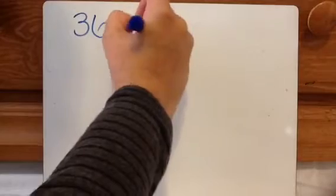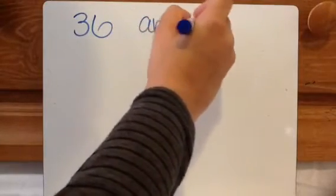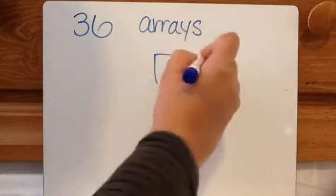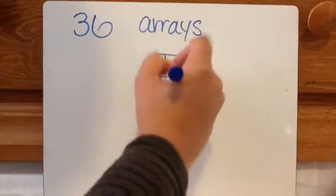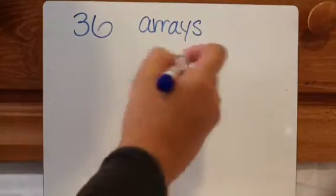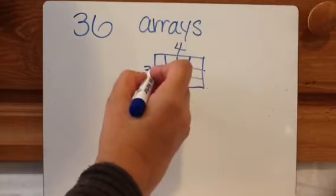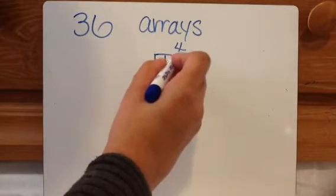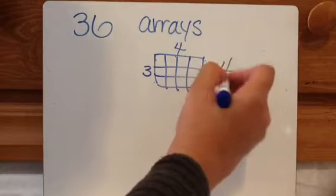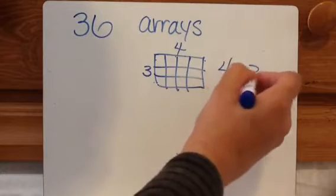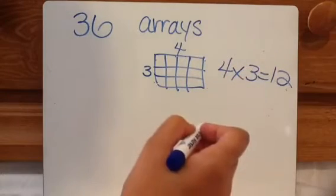So let's say you're told to make arrays that represent 36. Represent means show. If you don't know what an array is, an array is kind of like a setup of numbers or objects that's a faster way of multiplying. Like I know there are three rows and there are four in each row, so I'm going to do four times three and that's going to equal 12.